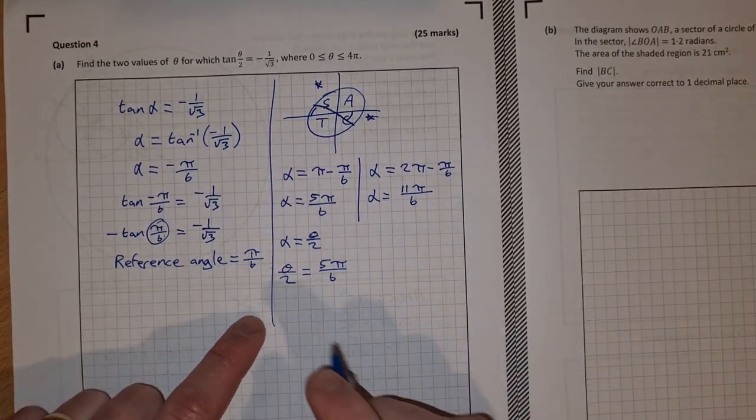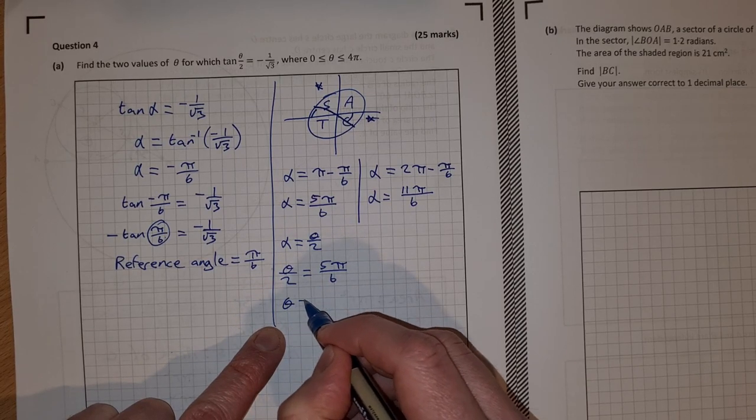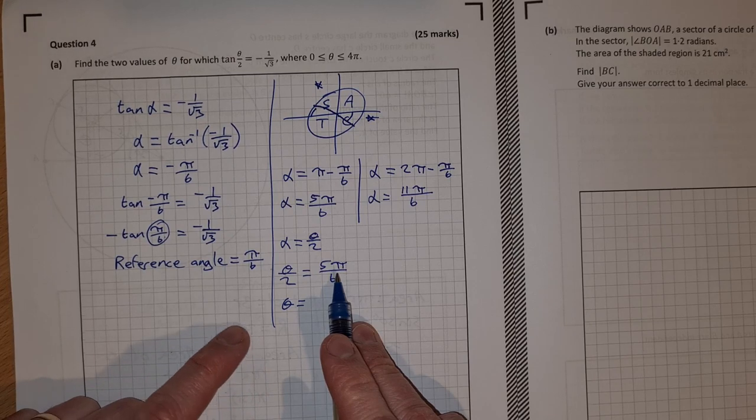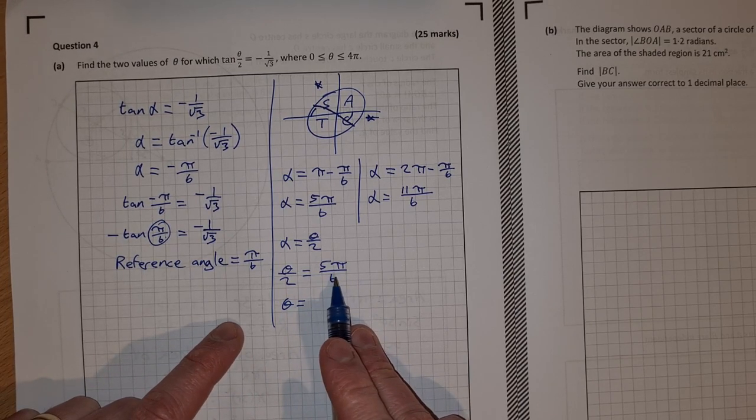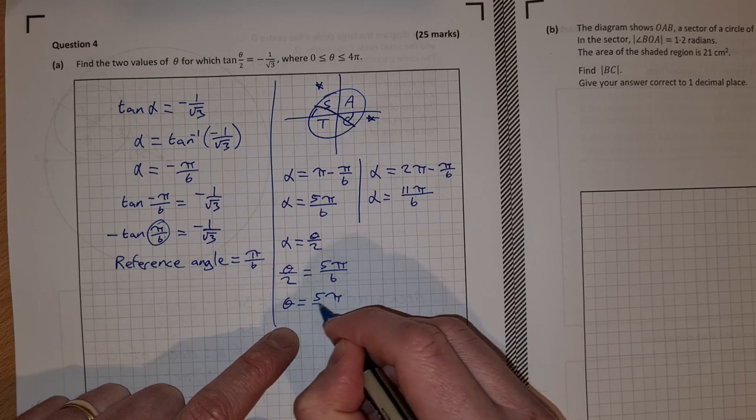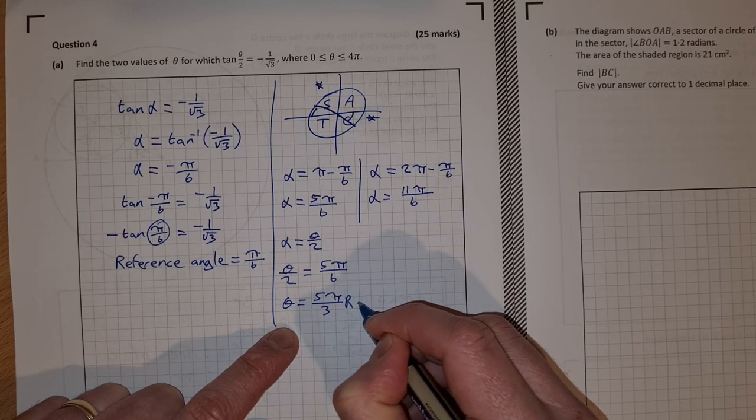So if I want to find theta, I multiply across by 2. Theta is equal to 2 times 5 pi over 6 is 10 pi over 6, which simplifies down to 5 pi over 3. And that's radians.